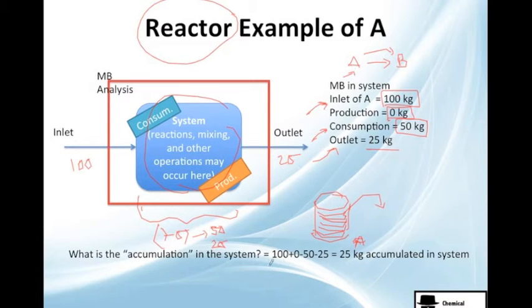So just mathematically I show you this. The mass balance in the system is 100 plus the production which we don't have, minus 50 which is the consumption, minus 25 the outlet. Do the math and you get 25 kilograms are being accumulated in the system.